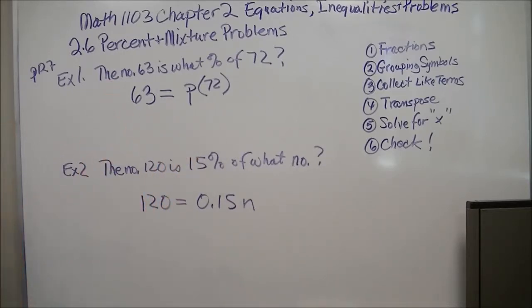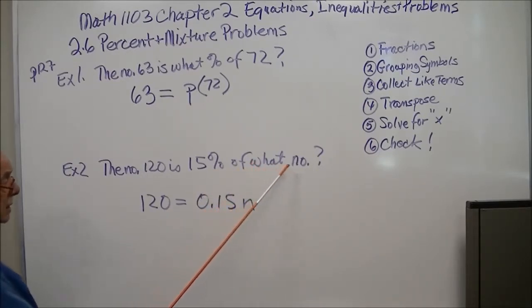This next one is similar. It says the number 120 is equal. Now whenever you have a percent, in order to do calculations with it, you need to convert it to its decimal form. So 15 percent becomes .15. Of what number? We don't know that. That's our unknown.